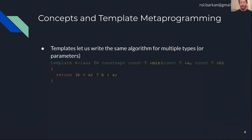Templates are a way to write a single algorithm for many different types. Here is the min algorithm that takes two objects and returns the minimal one. Using templates, you can perform the same algorithm across many types — numbers, integers, strings, et cetera.